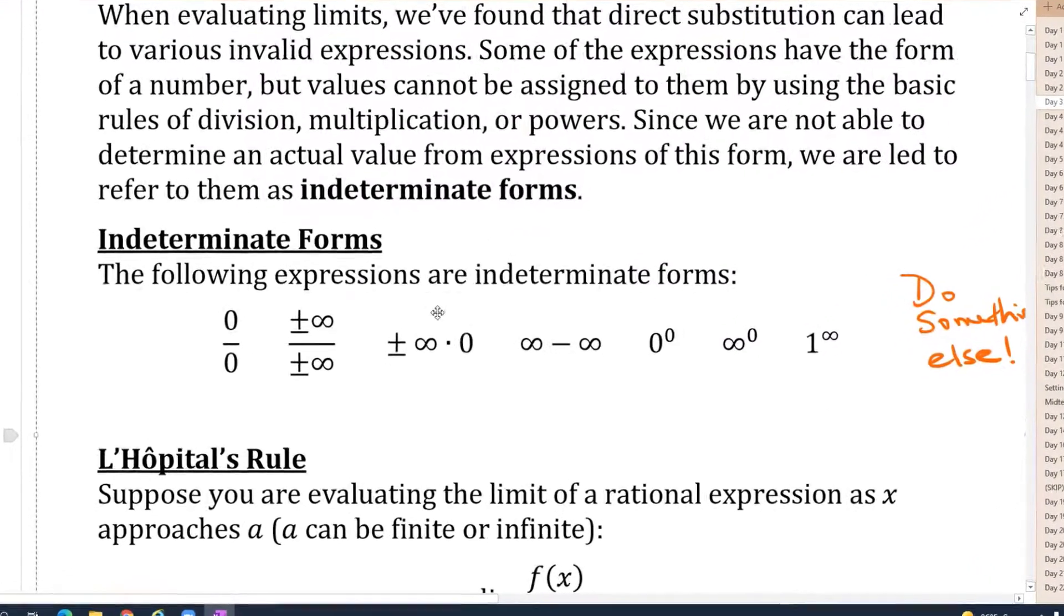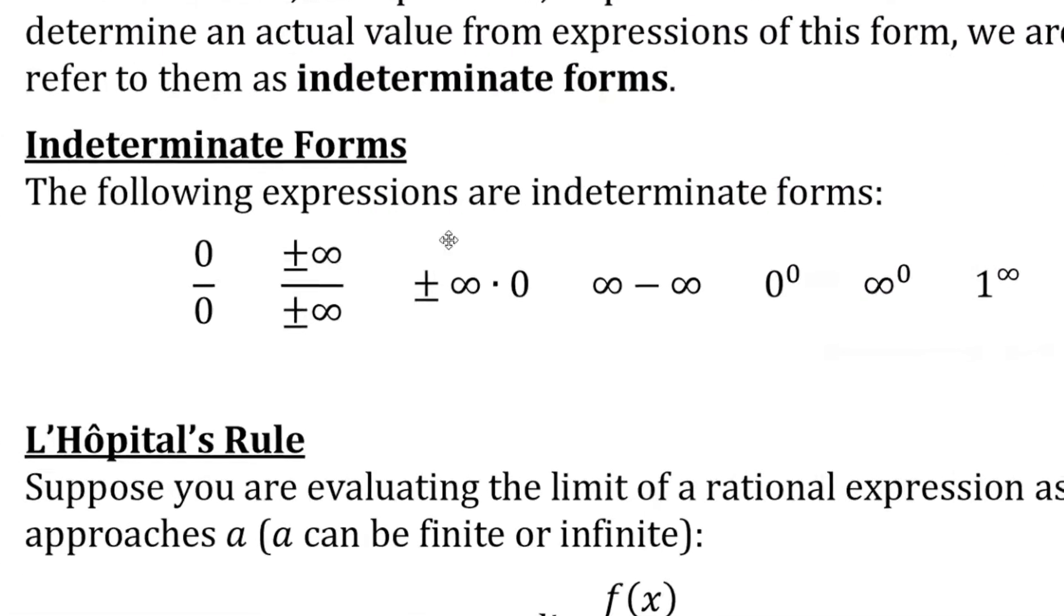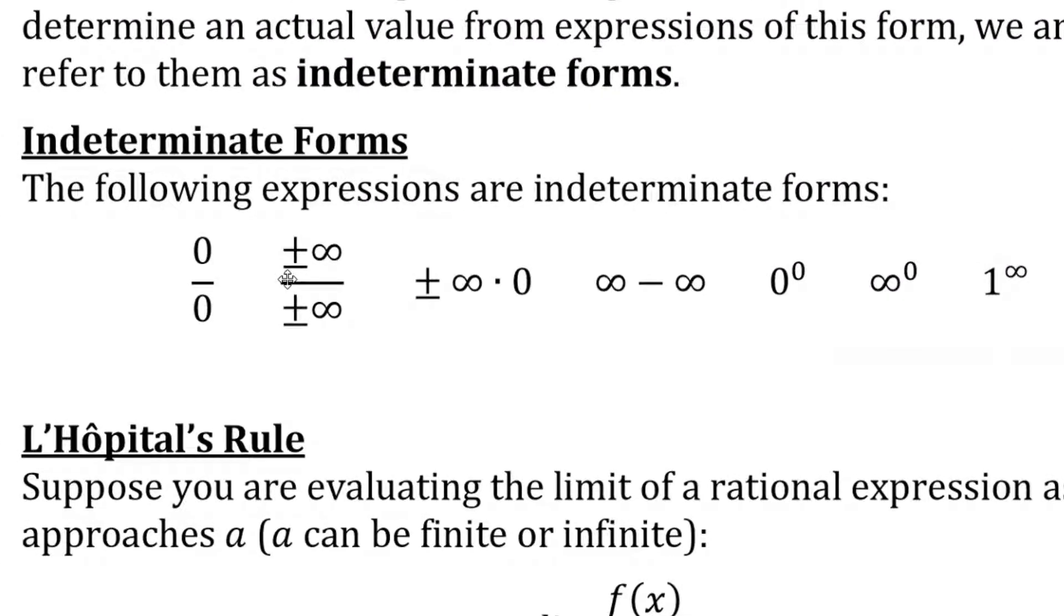Last time we saw that there are several indeterminate forms where if they come up when you're trying to take a limit, you need to do something else. So zero over zero or infinity over infinity. And by the way, the signs don't matter there. We do L'Hôpital's rule.